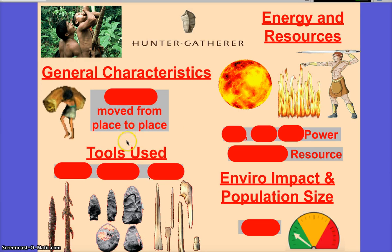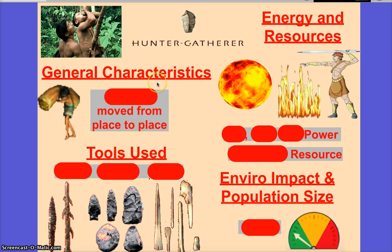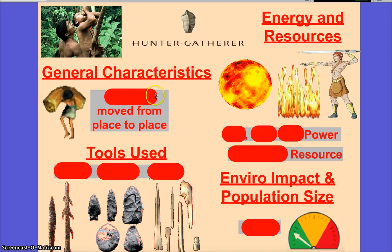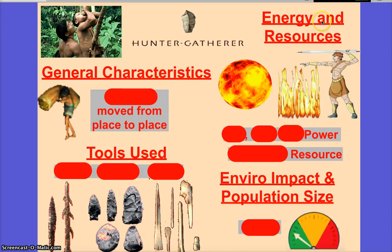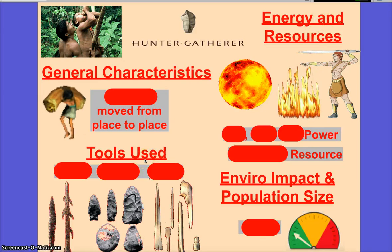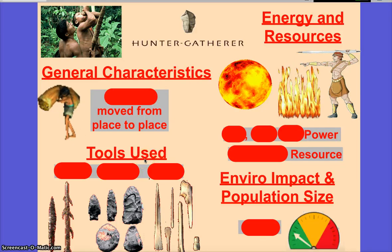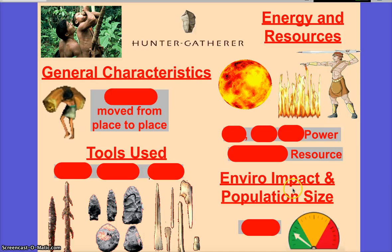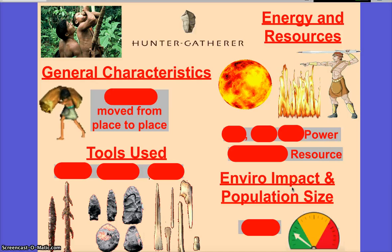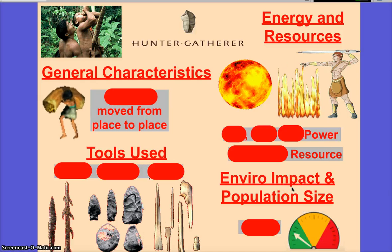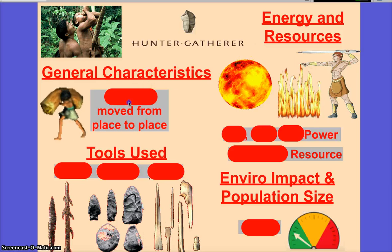For each society we're going to talk about some general characteristics or something that defines a society, energy and resources used by the society, any tools, weapons, or major discoveries, and then of course their environmental impact and their population — because they're very correlated, you'll see. So give me anything on the page.